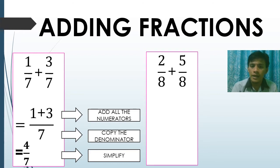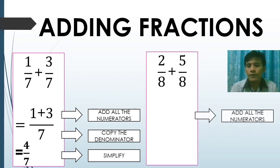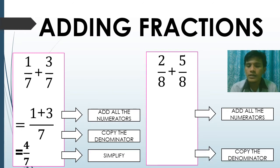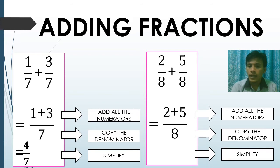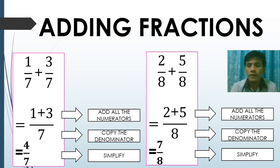Second example: two over eight plus five over eight. As you can see, the given problem has similar denominators, which is eight. First step: add all the numerators. Second step: copy the denominator which is eight. Two plus five over eight — simplify two plus five and that is seven. Our final answer is seven over eight, which is already in simplest form.